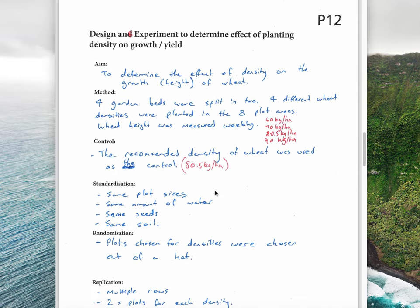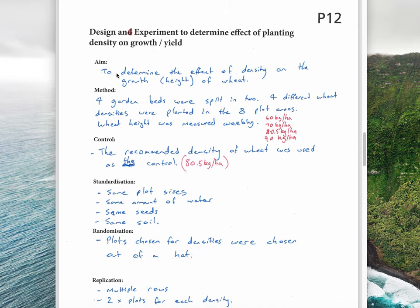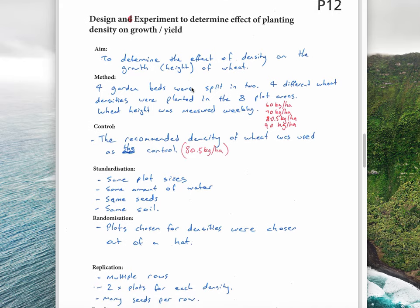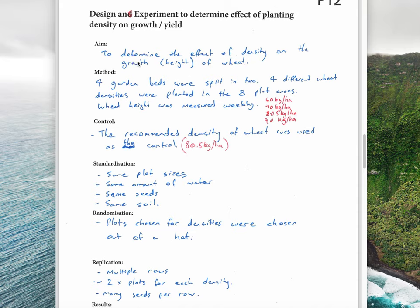Really the core of this dot point is designing an experiment, and we did this experiment previously. The aim was to determine the effect of density on the growth in height of wheat. It's important you put height because that's the thing we measured. The method was we had four garden beds split into two, and we had four different wheat densities planted in the A plots. The wheat height was measured weekly. We had 60 kilos, 70 kilos, 80.5 kilos which is the recommended density or the control, and 90 kilos per hectare.